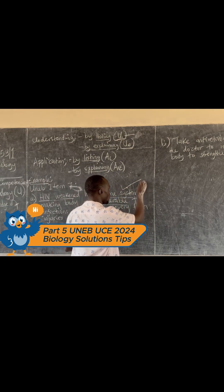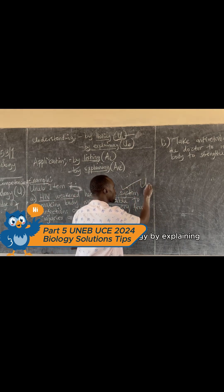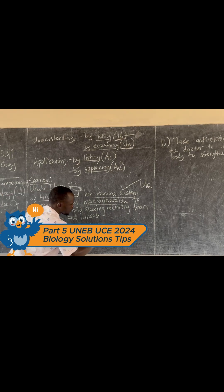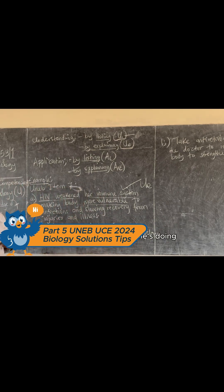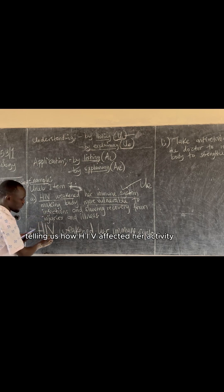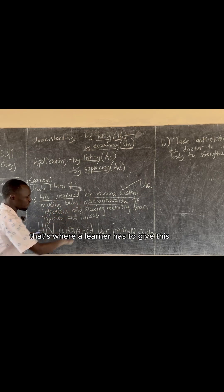A learner will be marked as having demonstrated understanding of biology by explaining. There is a learner who can identify the problem — yes, they see the problem is HIV. What did HIV do within her immune system? This problem was identified, and you are saying HIV within her immune system — how is it related to the sports she's doing? You have to go ahead telling us how HIV affected her activity and her possibilities in sports.